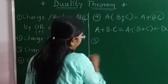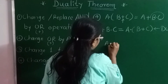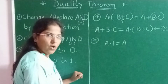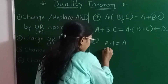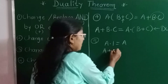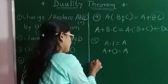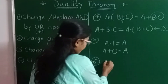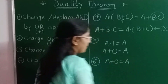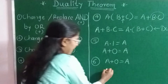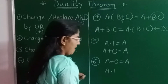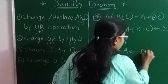Consider one more example: A · 1 = A — this is the AND law. A as it is, dot is there so replace it by plus, 1 is there so replace 1 by 0. So the dual is A + 0 = A. Next example: A + 0 = A — this is the OR law. Write A as it is, plus changes to dot, 0 replaces to 1. So the dual is A · 1 = A. These are also duals of each other.